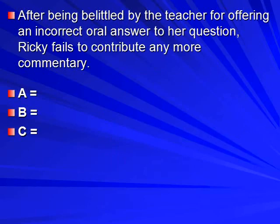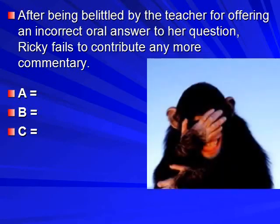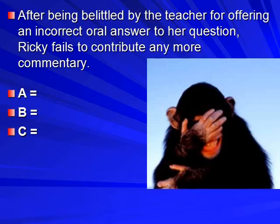The youngster offered an answer to a teacher's question, but it was inadequate in the teacher's eyes, and she chastised Ricky. Now Ricky doesn't contribute anymore in class. What's the A? The teacher's question. B: he offered an incorrect answer. C: he got chastised. His withholding of future contributions is motivated by negative reinforcement — silence keeps the negative thing, the belittlement, away. If that seems unclear, see the video on this site regarding positive and negative reinforcement.